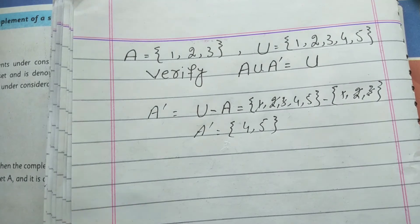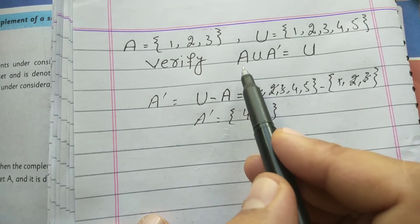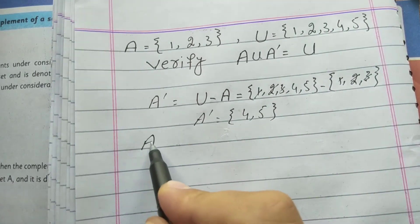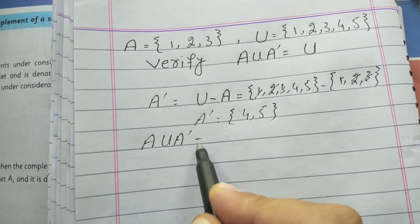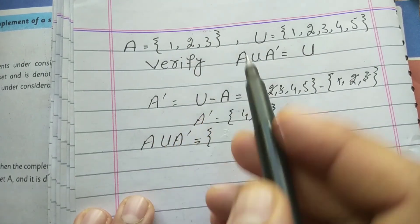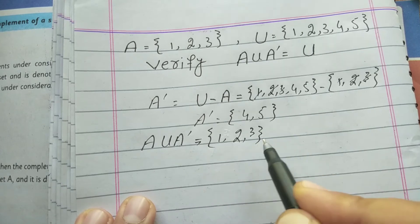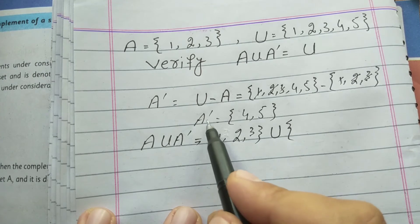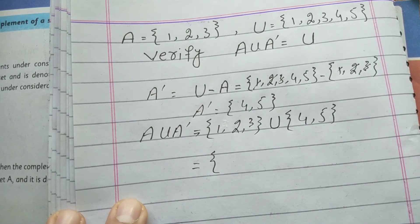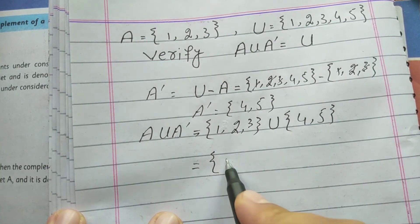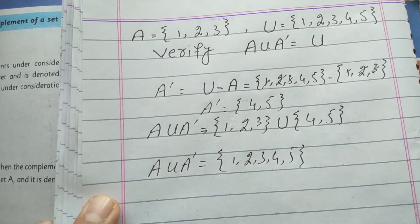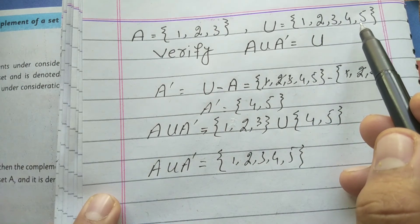Now we will verify A union A complement equals the universal set. In this set we write the terms of A: {1, 2, 3}, union A complement: {4, 5}. A union A complement — we write all the elements of A and A complement in one set: {1, 2, 3, 4, 5}.